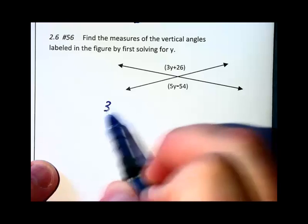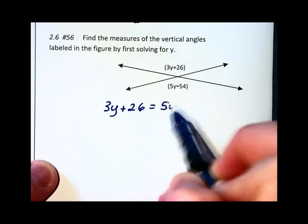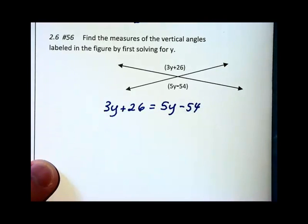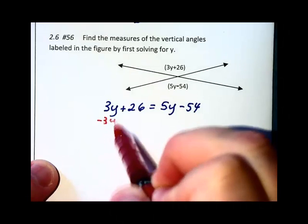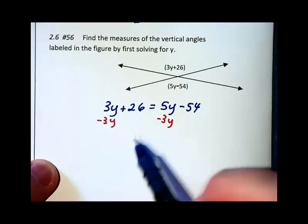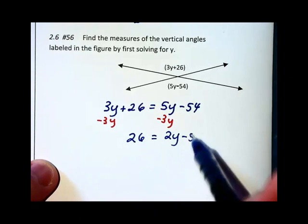So I can say 3y plus 26 is equal to 5y minus 54. I'm going to begin solving this equation by subtracting 3y in order to get all the variables on one side. That will give me 26 equals 2y minus 54.